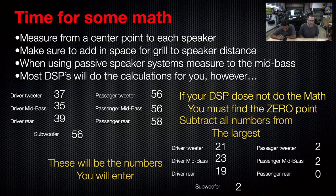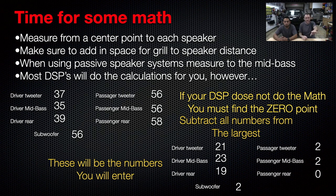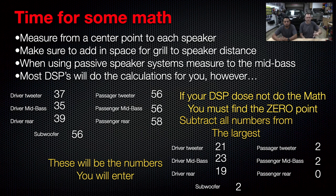Most DSPs will do the calculations for you — you can log in measurements like 37, 35, 39, 56, 56, 58 inches, and it'll figure out your milliseconds of delay and find your zero point. However, not all do. The zero point means: take the farthest speaker — in this case the passenger rear at 58 inches — that is the zero point, the farthest speaker from you. You need to push all other speakers out to that. If your DSP does not do the math, subtract all numbers from the largest. So taking 37, 35, 39, 56, 56, 56, 58 and subtracting from 58, you end up with 21, 23, 19, 2, 2, 2, and 0.